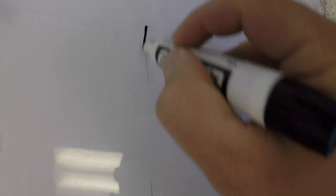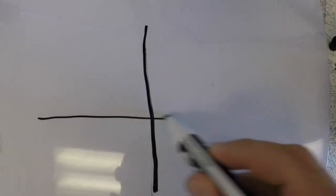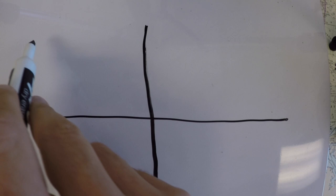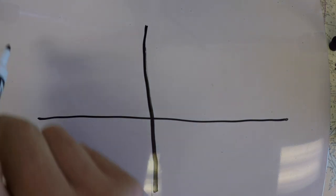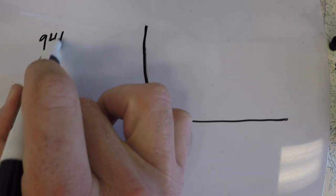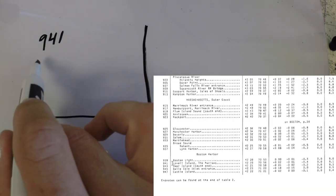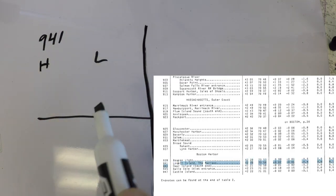And so for a normal tide problem, we kind of set up our grid. And up here is the reference station. So if we look in the tide tables, it's reference station 941.